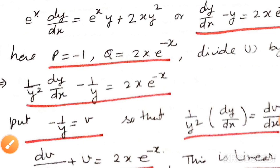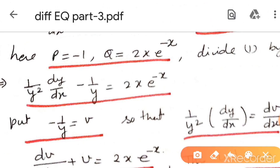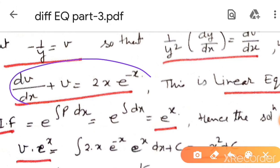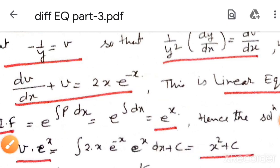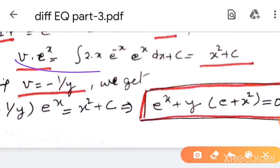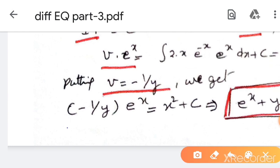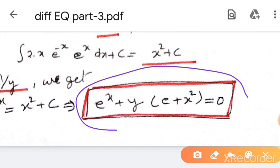Put v equal to minus 1 by y. This solution converts to linear form, a standard linear form. Find the integrating factor, use the solution formula for v and x, then substitute the value equal to minus one by y to get the final solution.